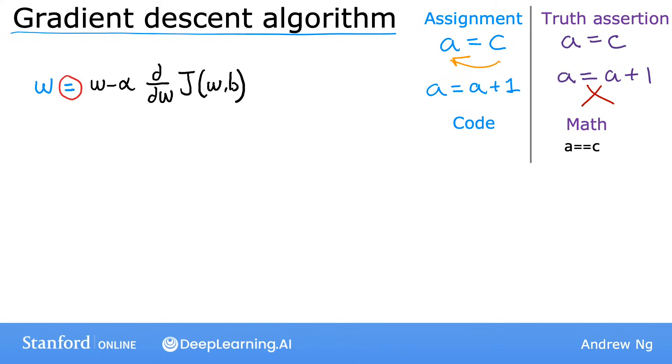Now, let's dive more deeply into what the symbols in this equation mean. The symbol here is the Greek alphabet alpha, and in this equation, alpha is also called the learning rate. The learning rate is usually a small positive number between 0 and 1, and it might be, say, 0.01.